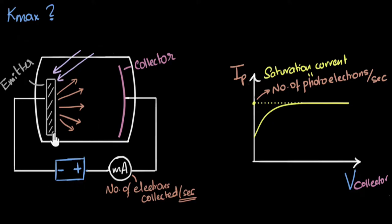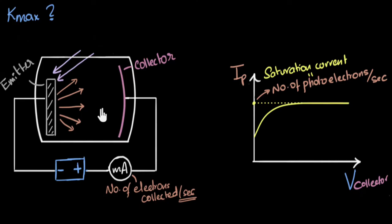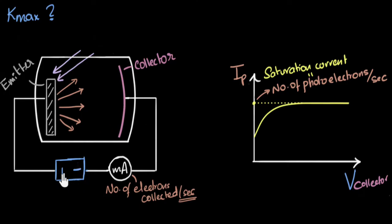Currently the collector is connected to the positive terminal, so it's attracting the electrons. If you want to stop the electrons, you need the collector to repel them. That means the collector should be connected to the negative terminal of the battery. So I just flip the battery — that's the modification needed. I put the negative terminal to the collector and positive on the other side, giving negative voltage to the collector.